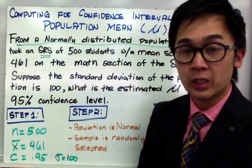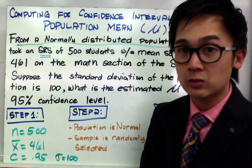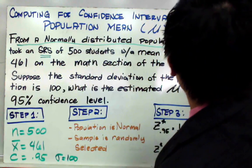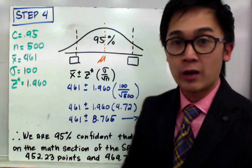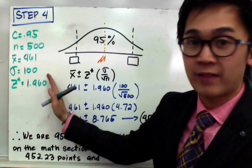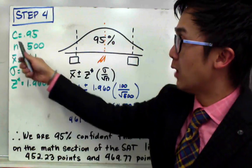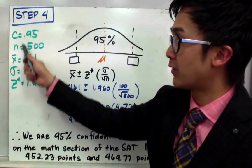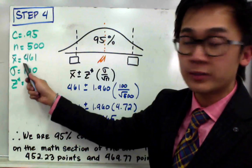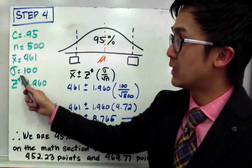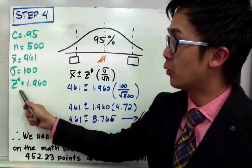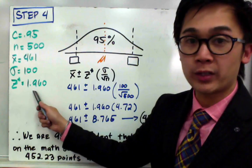So on our step number four, I have organized all my numerical values here given by the problem. We have the confidence level of 0.95, sample size of 500, the sample mean of 461 points, standard deviation from the population which is 100, and the Z star which we computed is equal to 1.960.